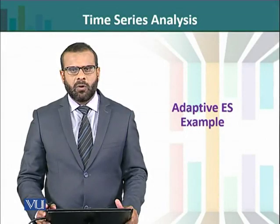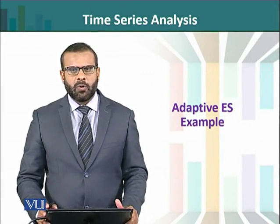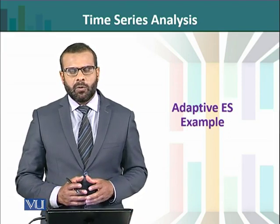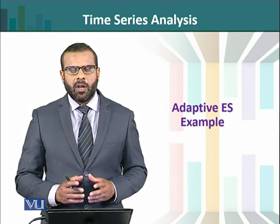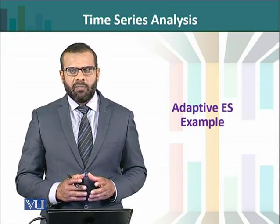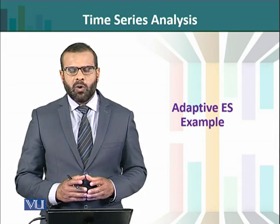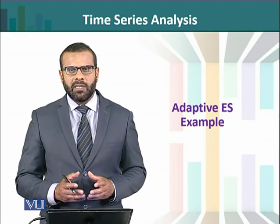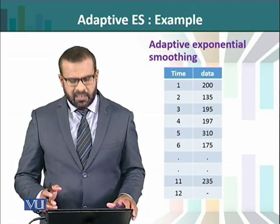In this lecture we will work on the calculation of the adaptive rate of exponential smoothing. In simple exponential smoothing, we have a parameter denoted by alpha which is kept fixed throughout the time series. In some situations, having alpha fixed at a certain level may not be helpful, so with the passage of time we need to update the value of the smoothing parameter. Adaptive exponential smoothing is used in such scenarios.